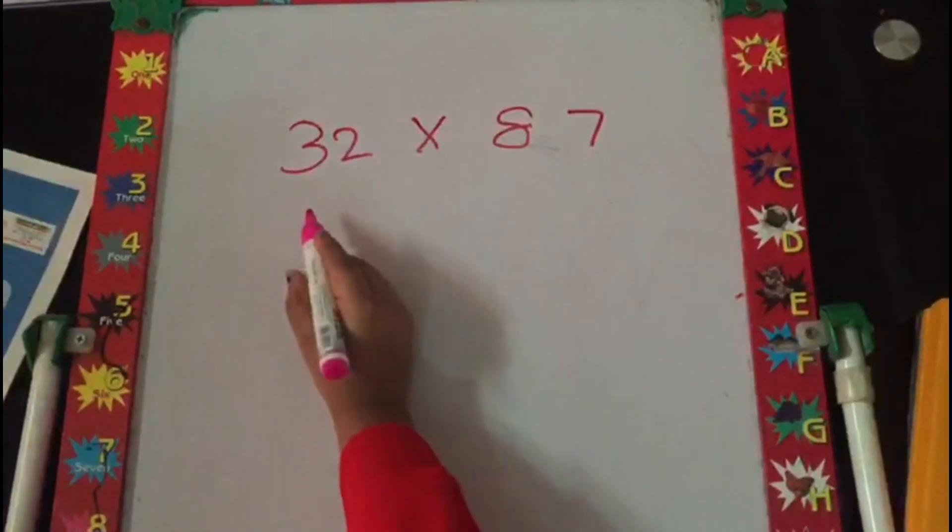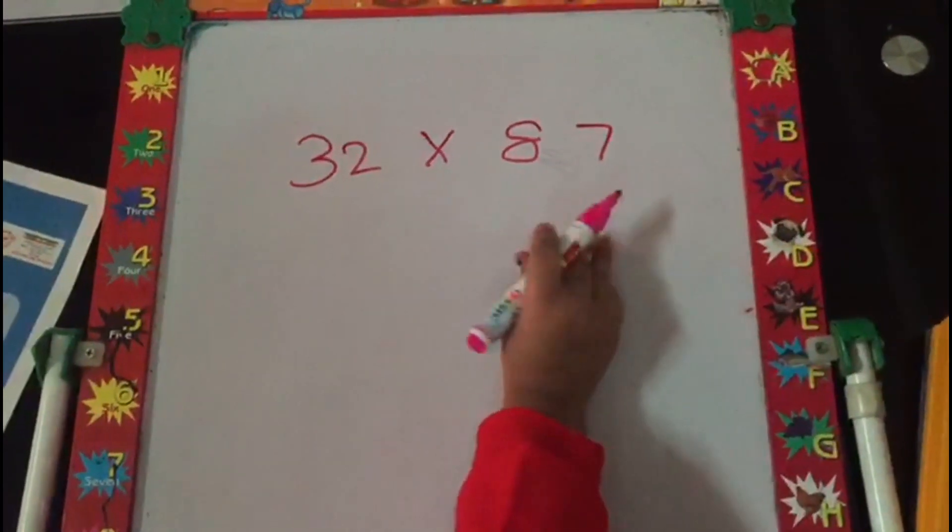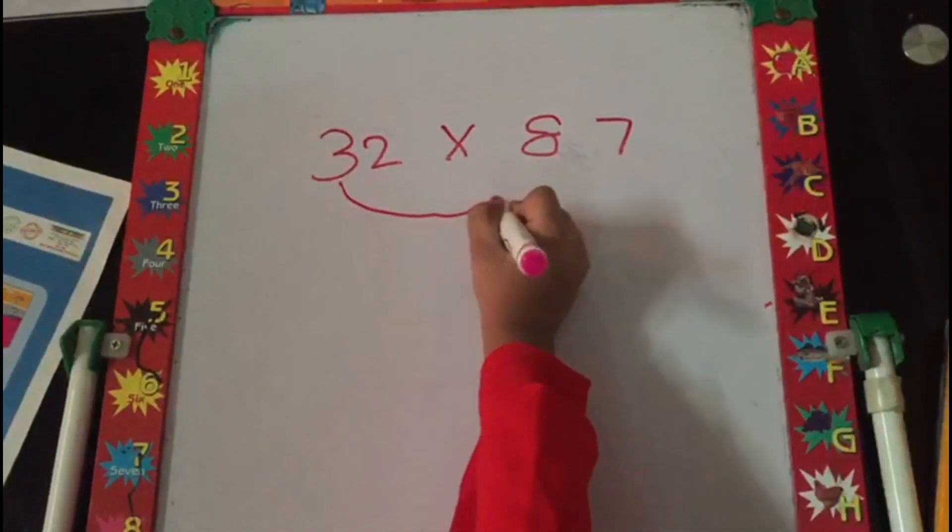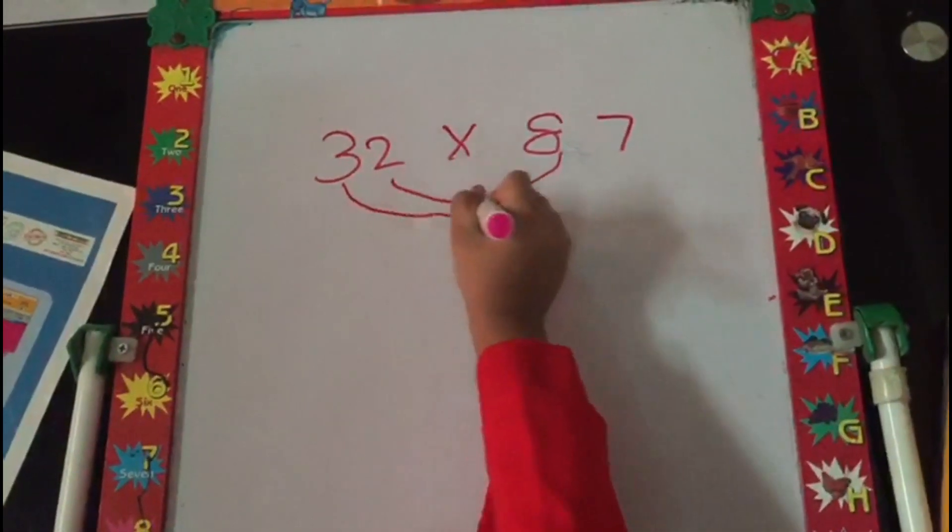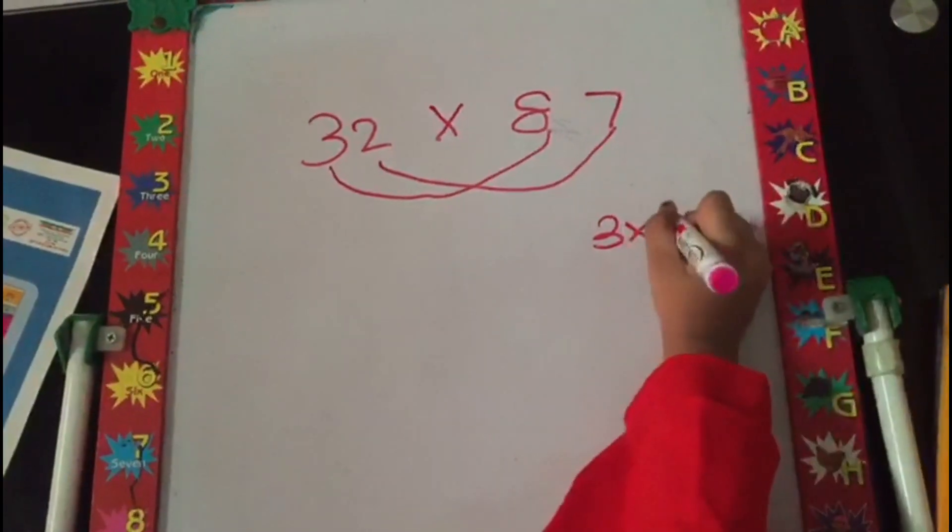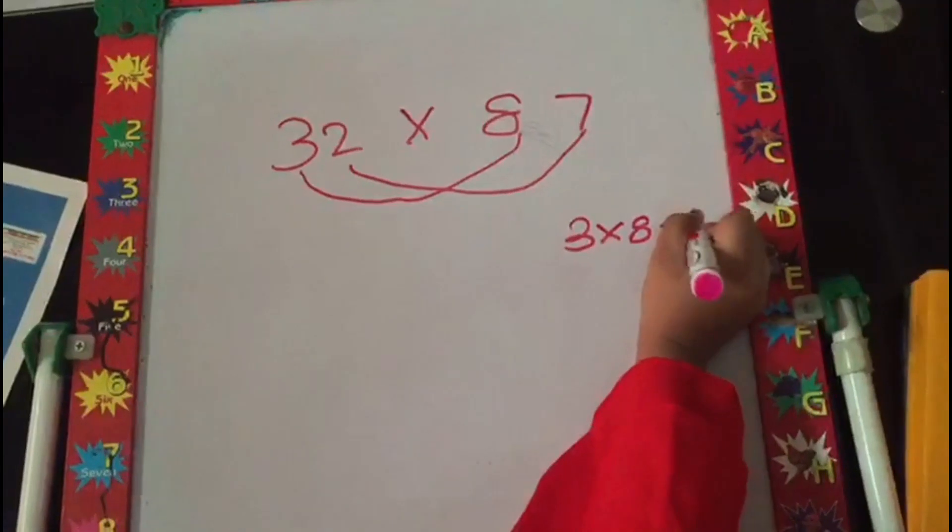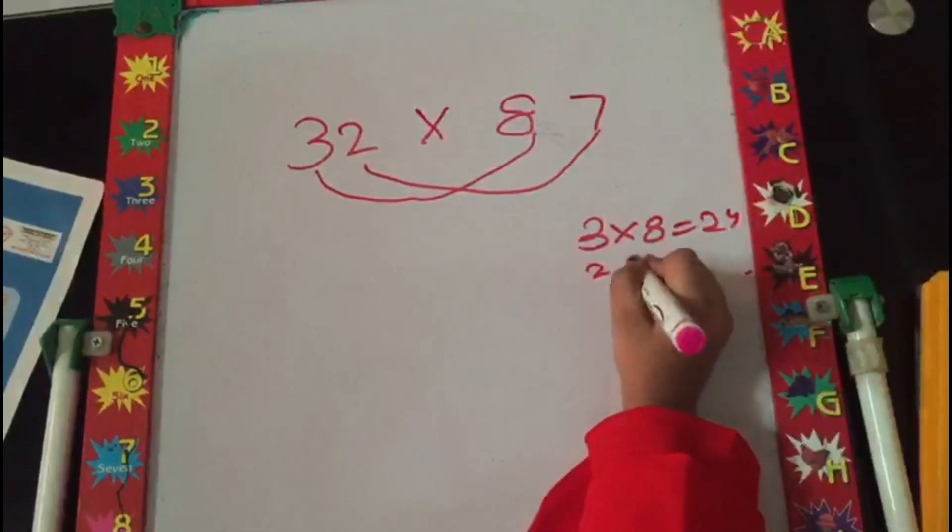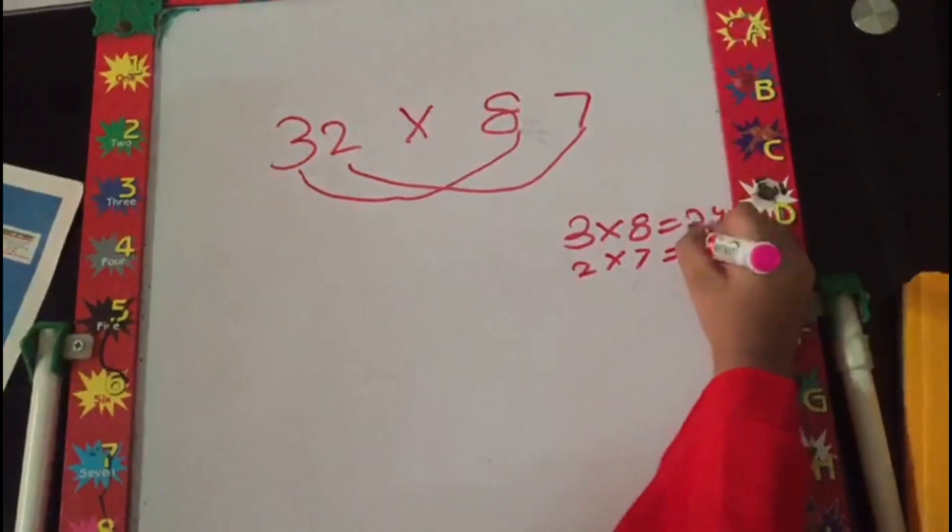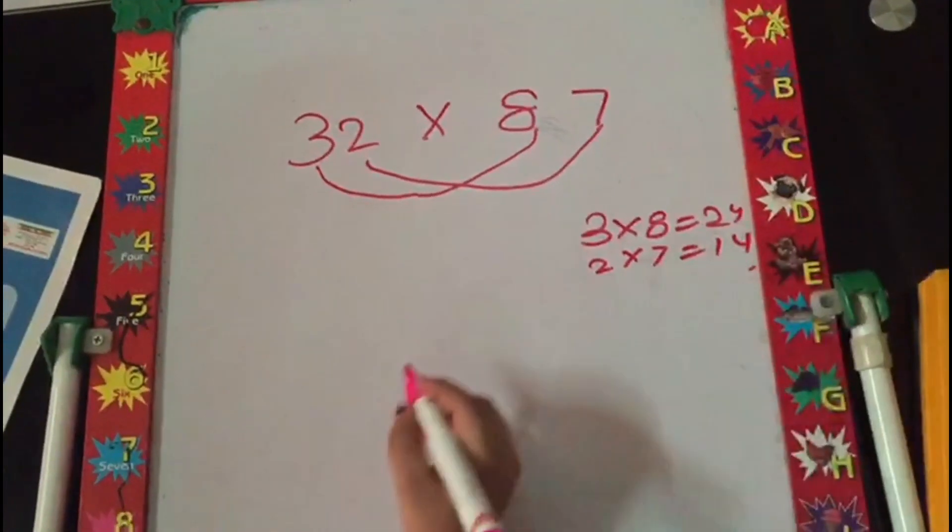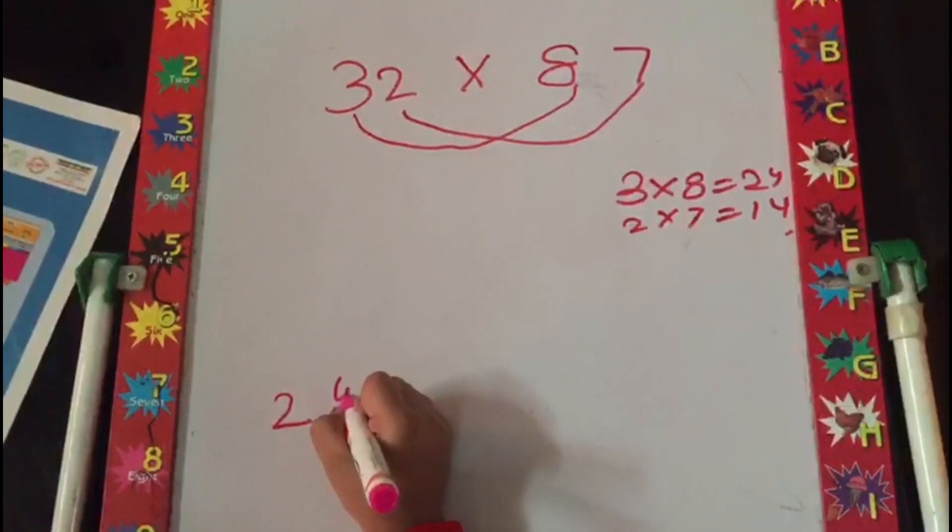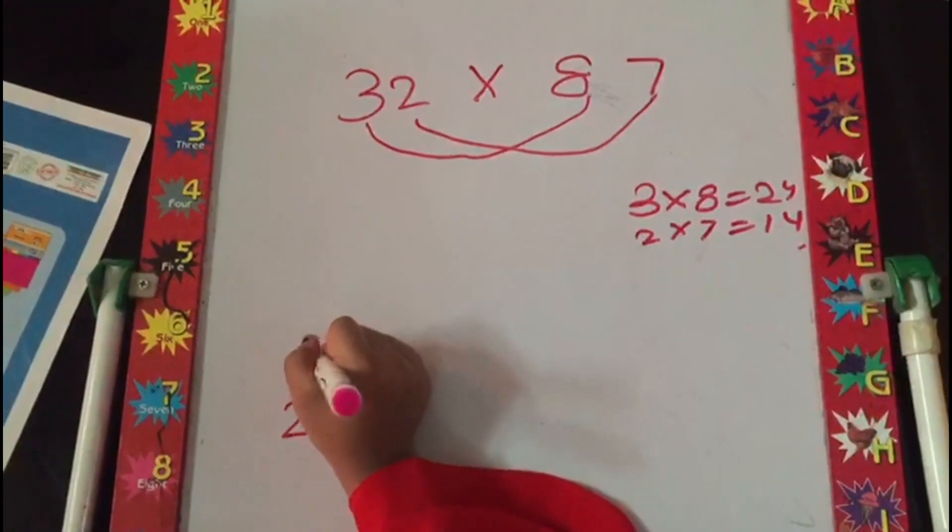Now we are taking up an example of carry forward: 32 multiplied by 87. First step will be criss cross multiplication. We have got 24 at 100s place.